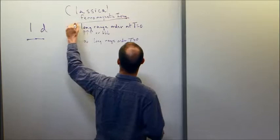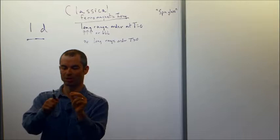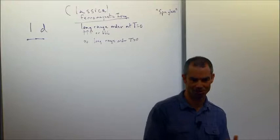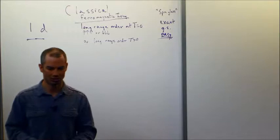If instead of considering the ferromagnetic Ising you consider some spin glass Hamiltonian — just some completely arbitrary interaction between nearest neighbors — it's actually quite easy to find the exact ground state. This is an algorithm known in many fields as dynamic programming, transfer matrix, and so on. So the exact ground state is easy to find when you do an arbitrary Hamiltonian.